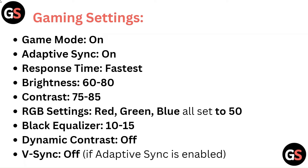Gaming Settings: Game Mode on, Adaptive Sync on, Response Time fastest. Brightness 60 to 80, Contrast 75 to 85. RGB Settings — Red, Green, Blue all set to 50. Black Equalizer 10 to 50, Dynamic Contrast off, V-Sync off if Adaptive Sync is enabled.